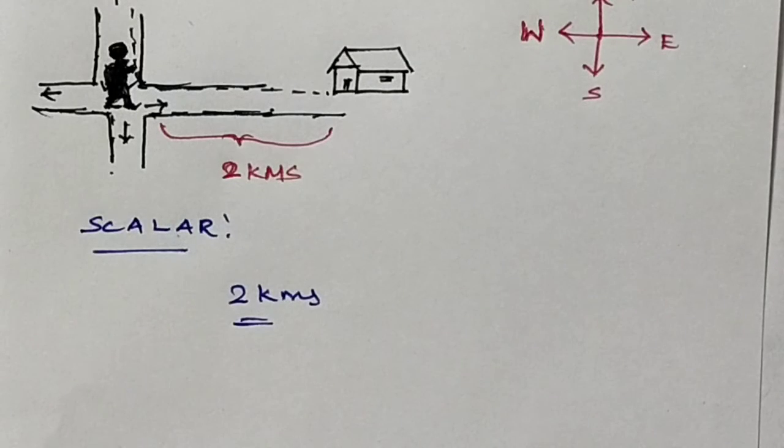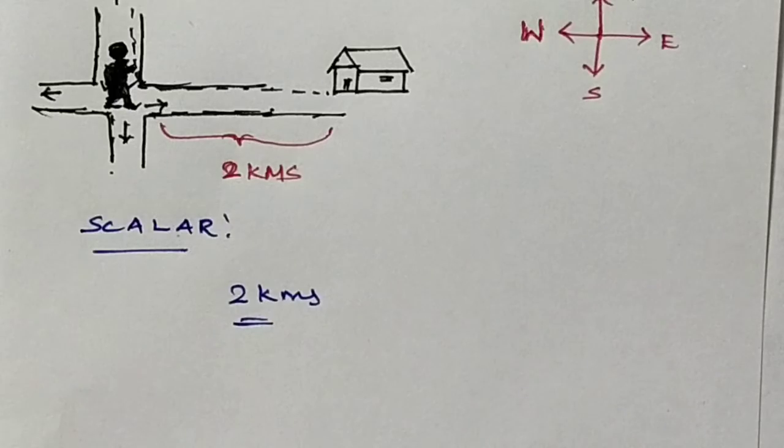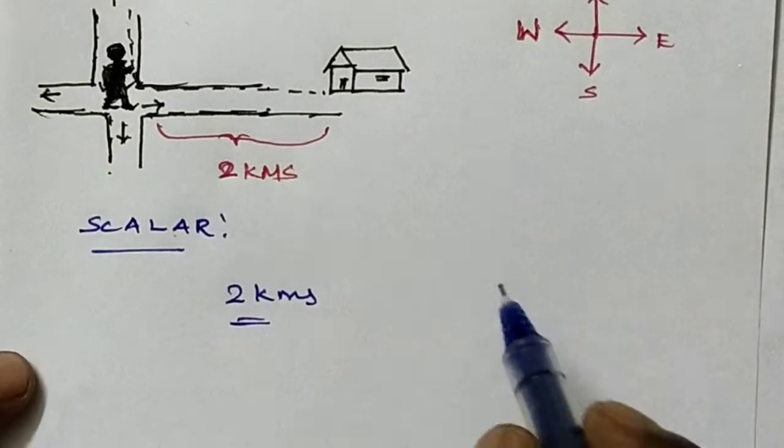Other examples of scalar quantities are: distance, mass, temperature, speed, and energy. These are all examples of scalar quantities.